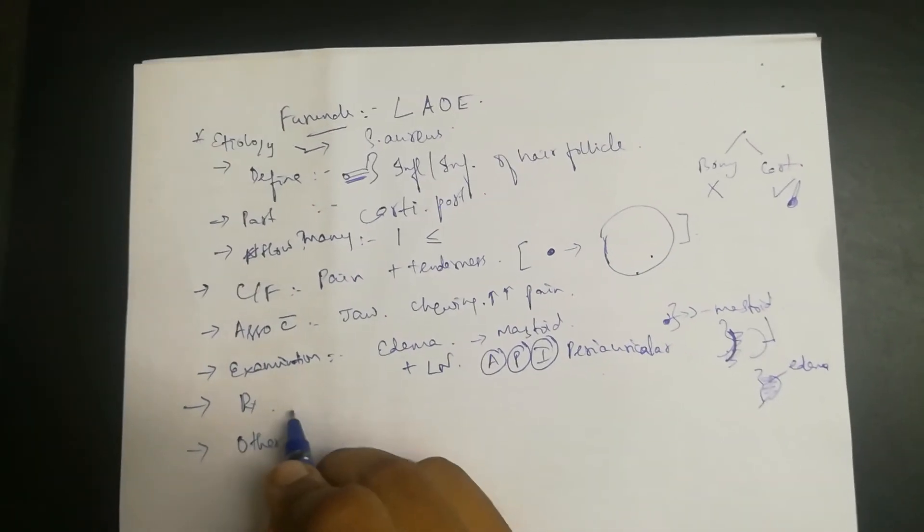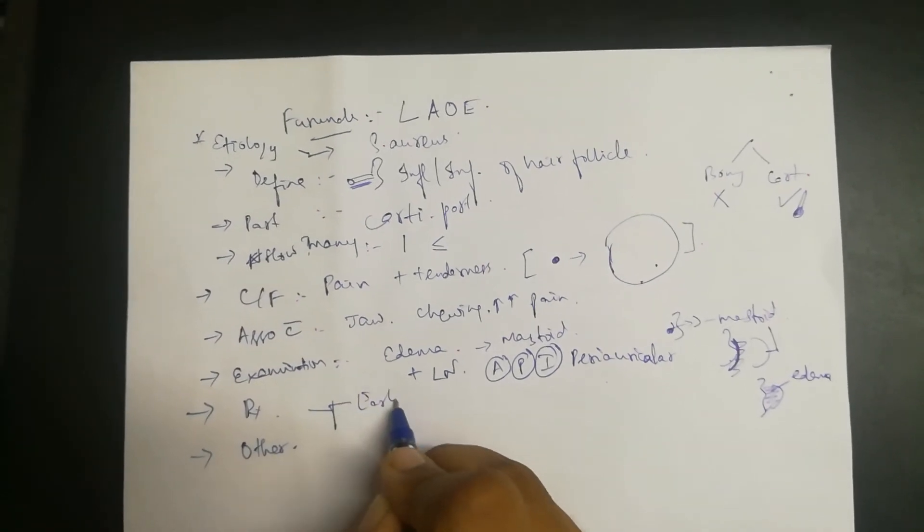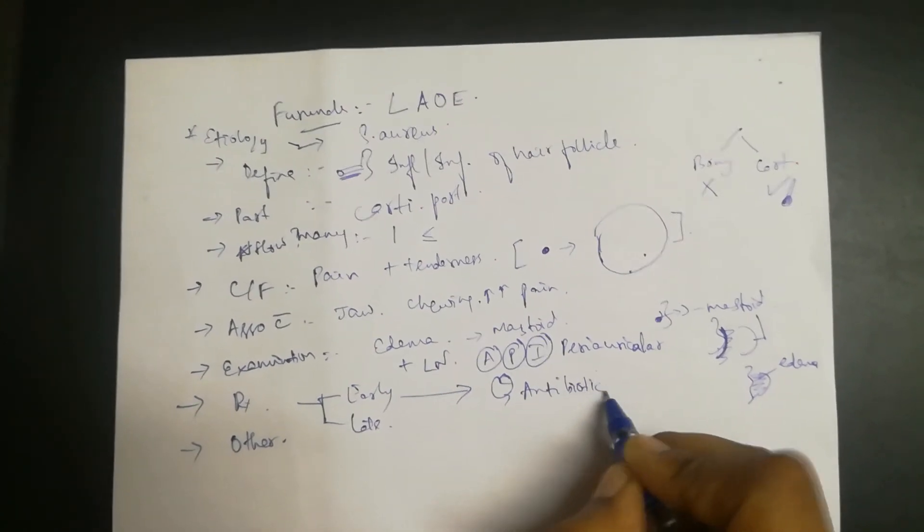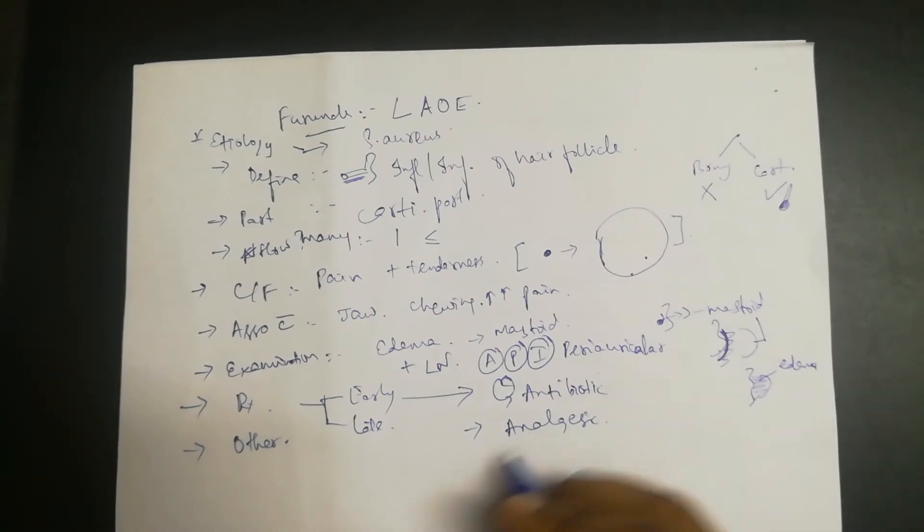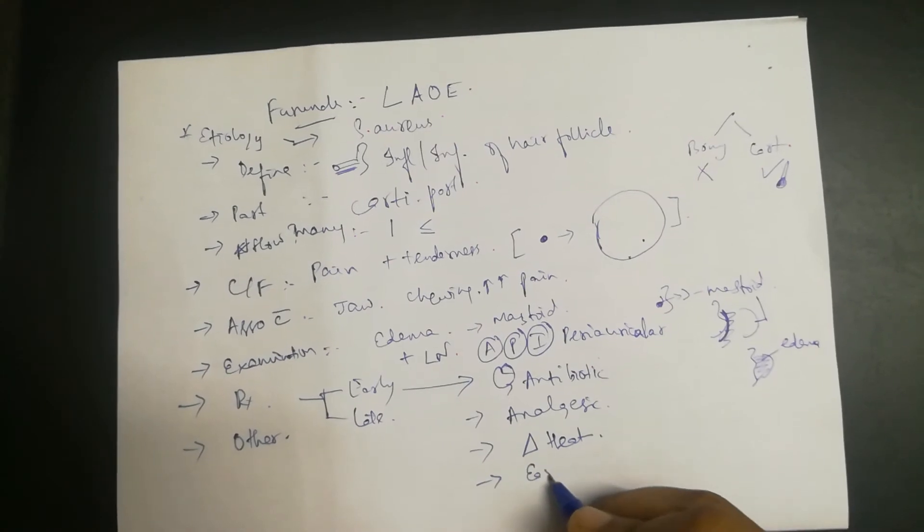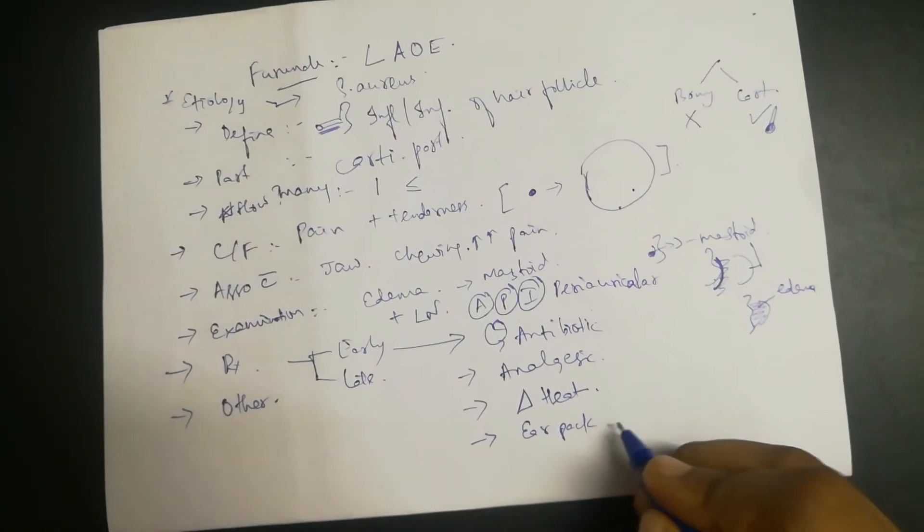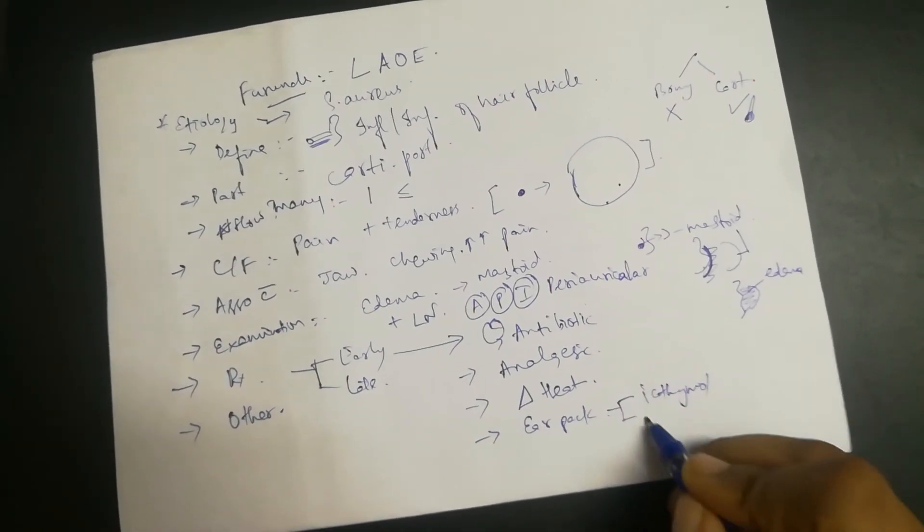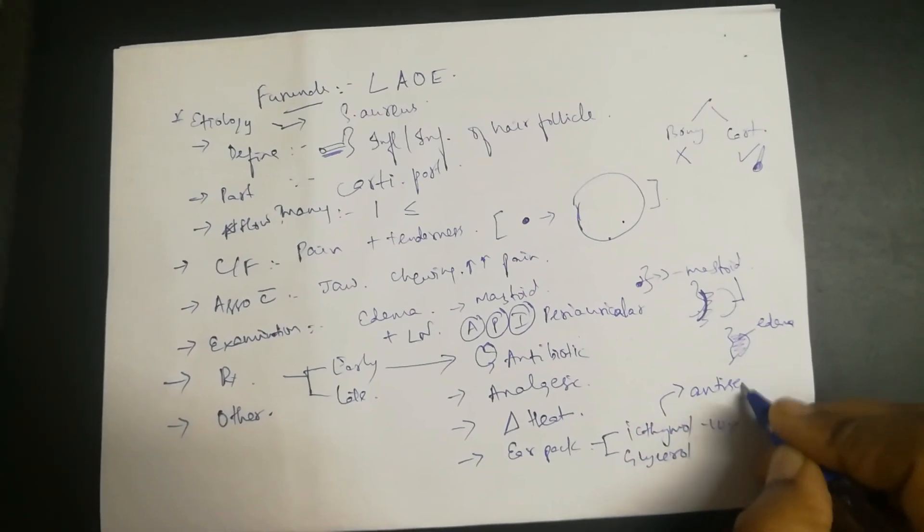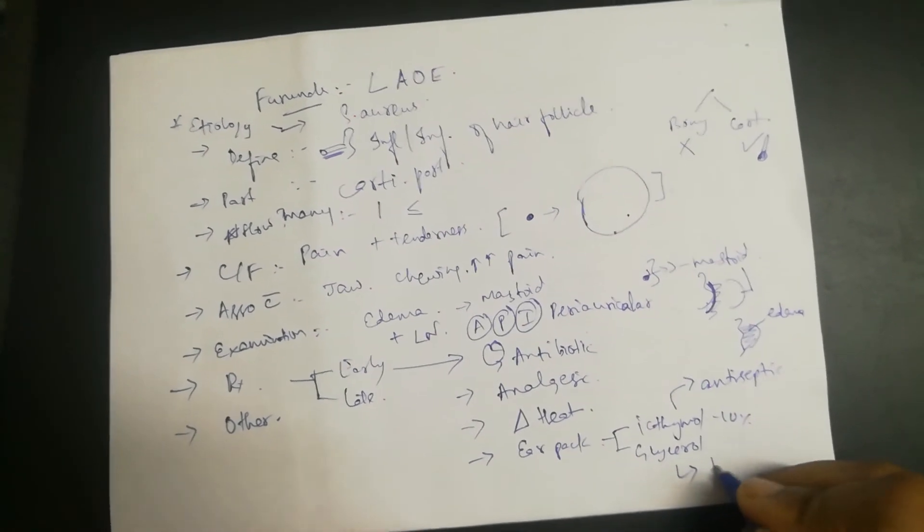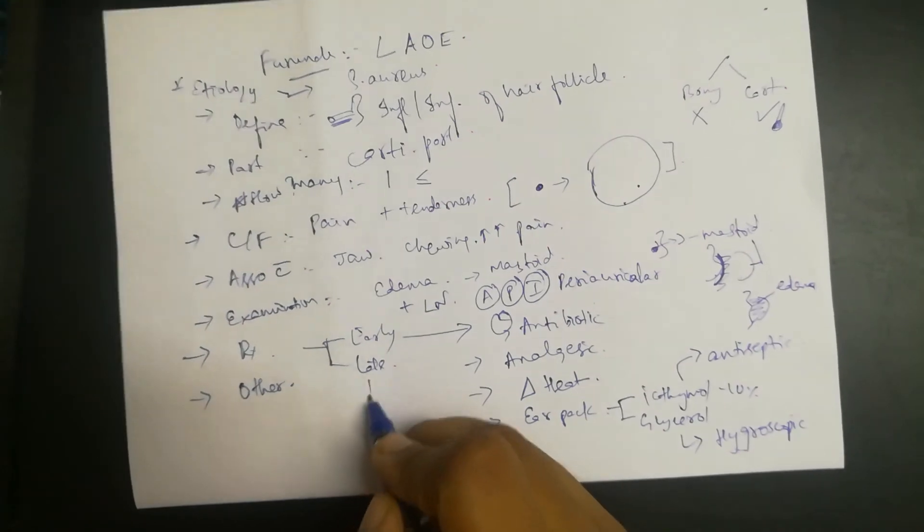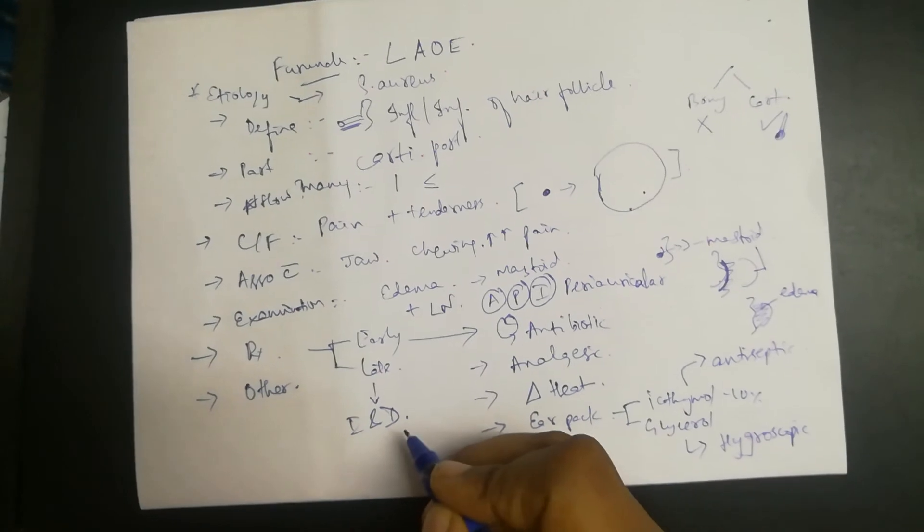Treatment can be early or late. For early cases: one, systemic antibiotics; two, painkillers or analgesics; three, application of heat locally; and four, ear pack with ichthammol 10% and glycerin. Ichthammol is a mild antiseptic agent, and glycerol is hygroscopic, meaning it relieves edema. In late treatment, incision and drainage of the abscess is done.